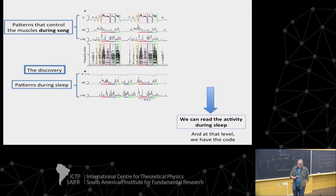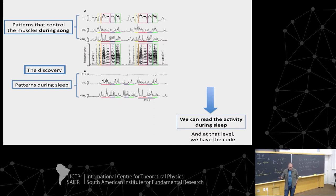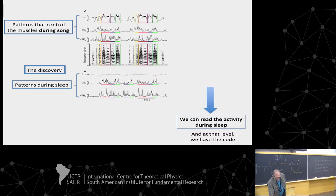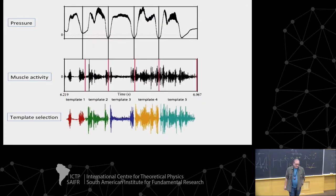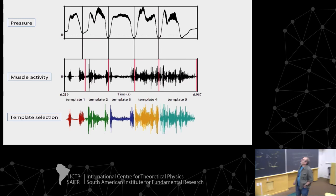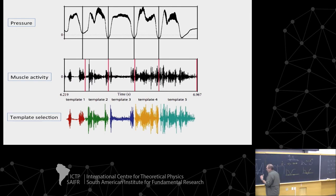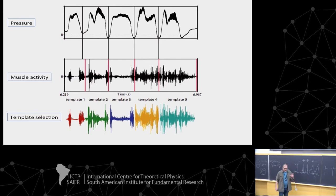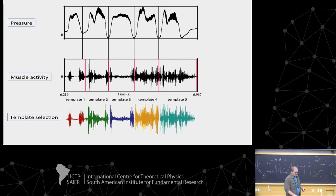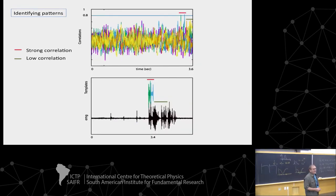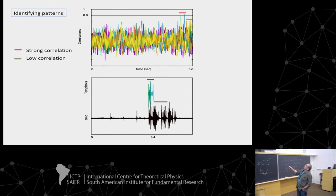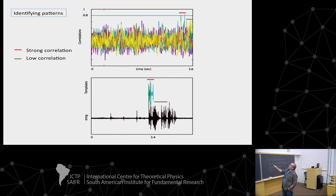How similar are those patterns of activity to the patterns used during song production? We looked at the activity during the day — the pressure patterns and the muscle activity patterns — and we separated what we call templates. Then I took hundreds of hours of measurements of electrical activity during the night and computed the correlation with those templates. Most of the time there is nothing — no correlation at all. But from time to time, you get these huge spikes of correlation between some template and the time trace recorded at night.